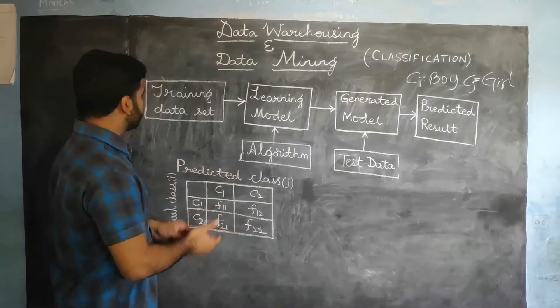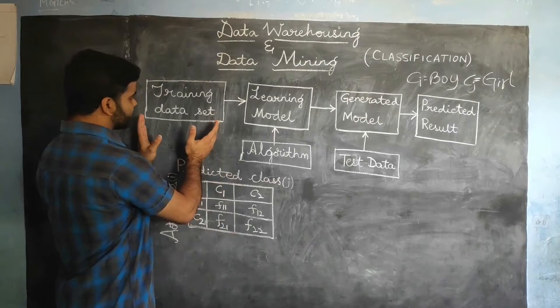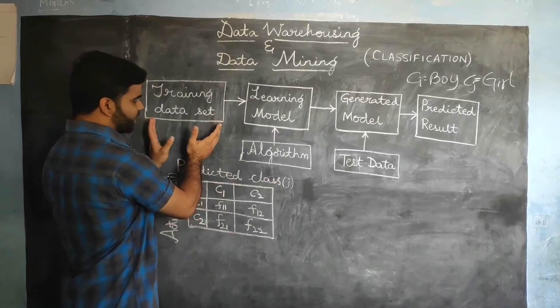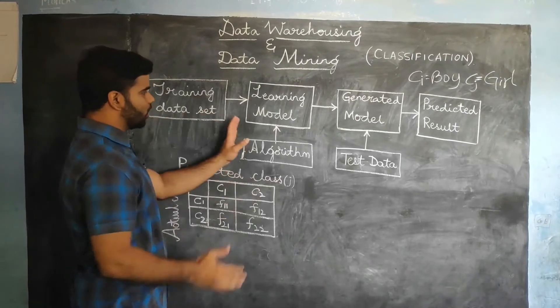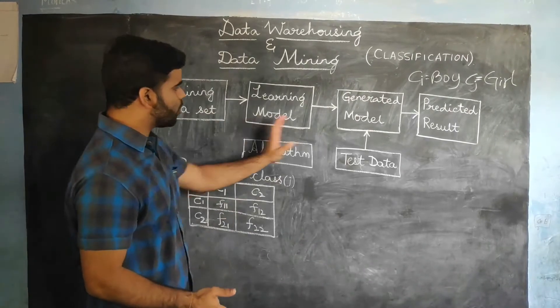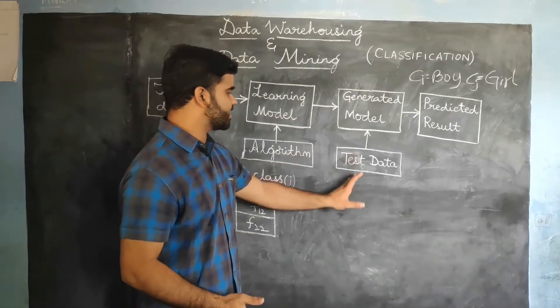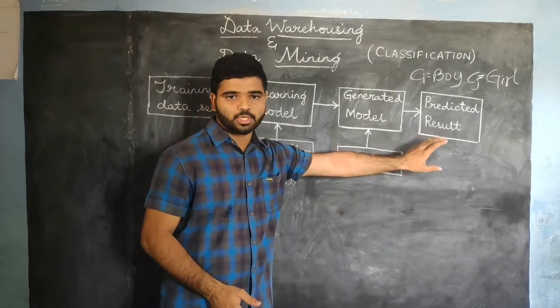The components of a classification system consist of a training data set, an algorithm, a model, test data, and the predicted result.